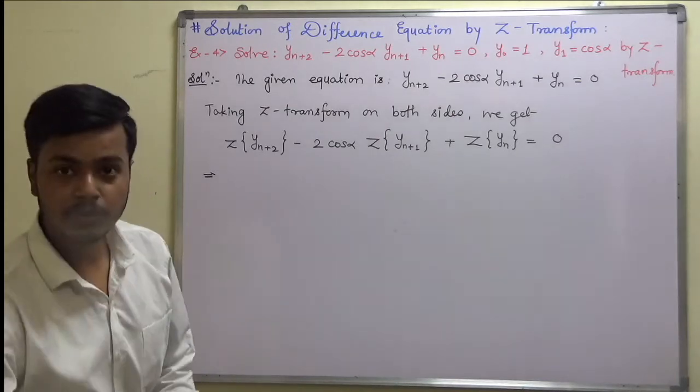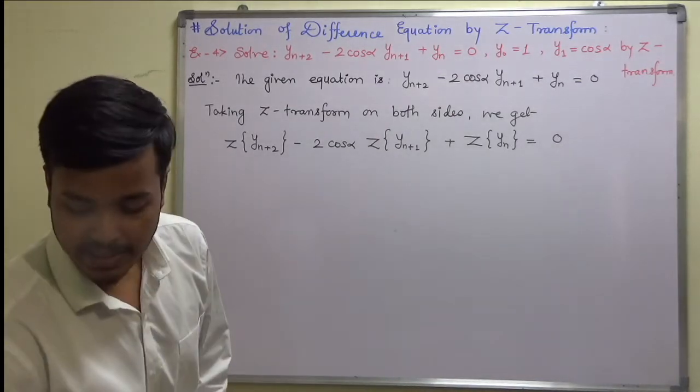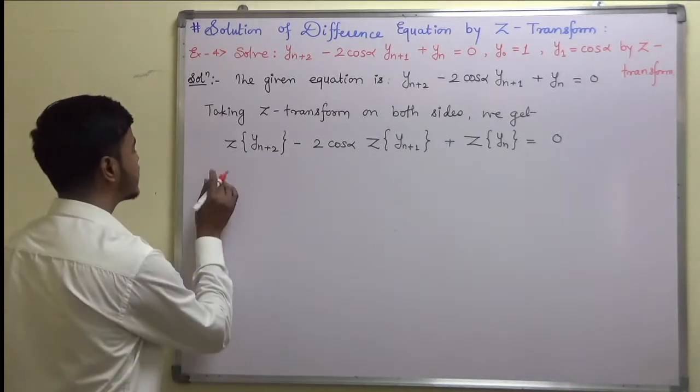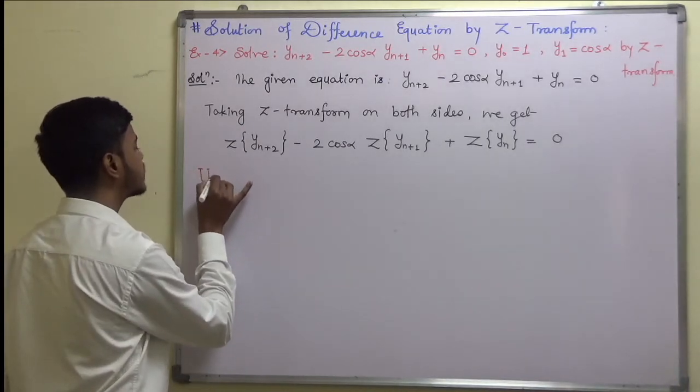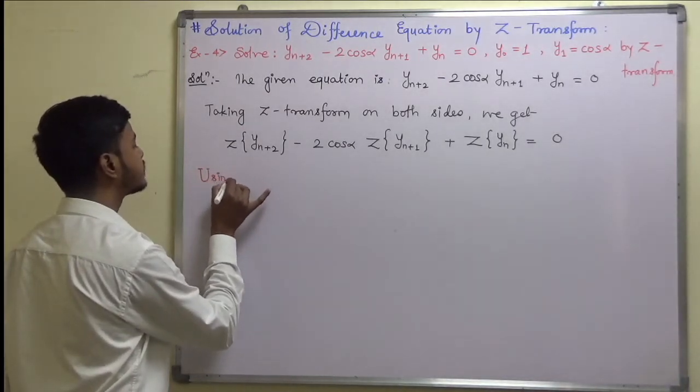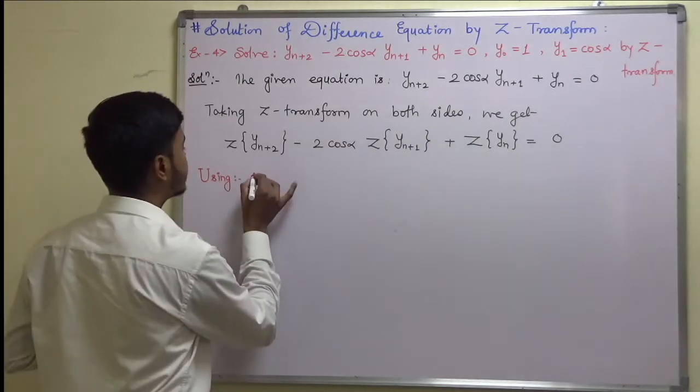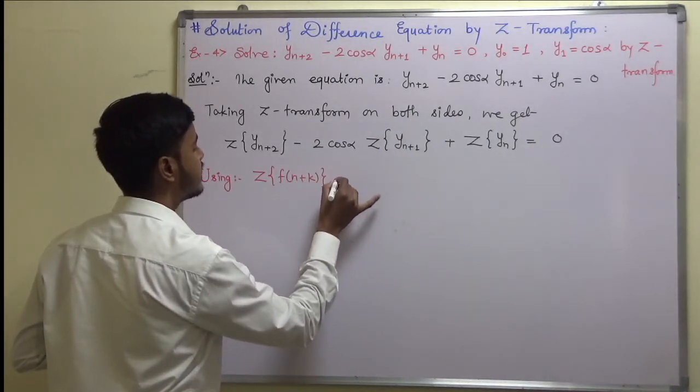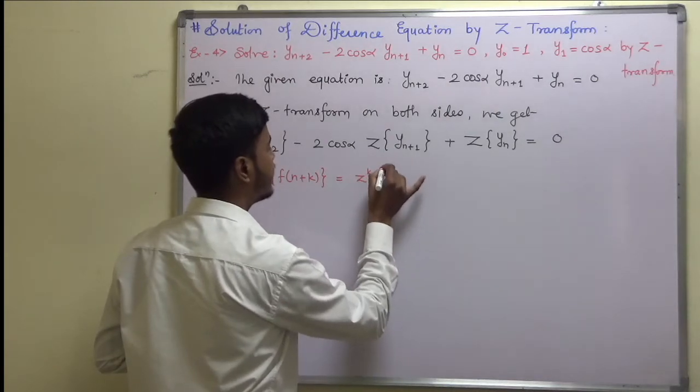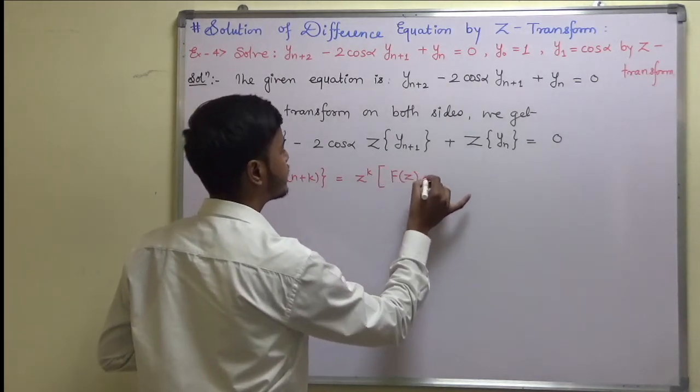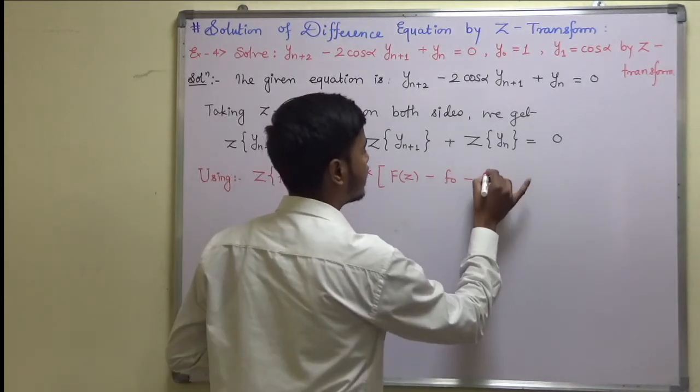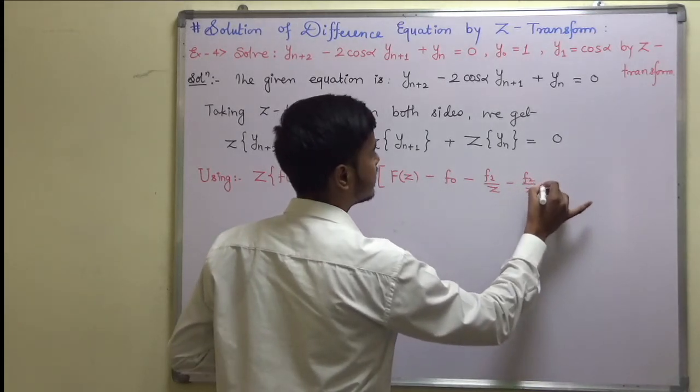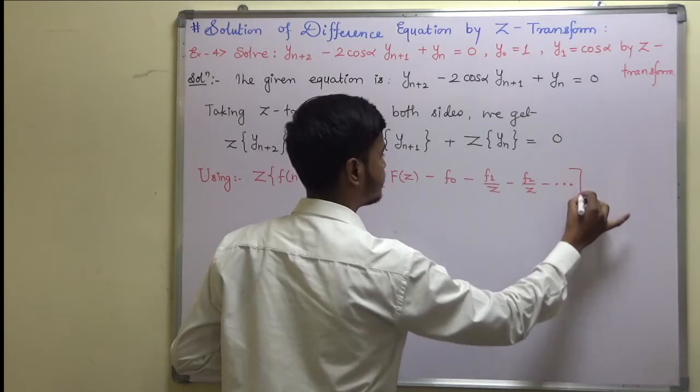Now we're going to make use of the shifting property. It is better to write down this shifting property before using it to avoid any silly mistake. Using Z-transform of f(n+k) is same as z^k times [f(z) - f(0) - f(1)/z - f(2)/z^2 and so on].